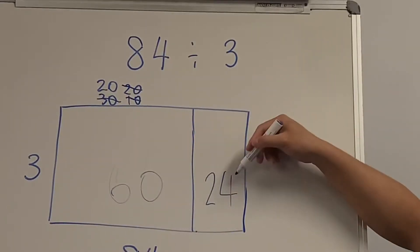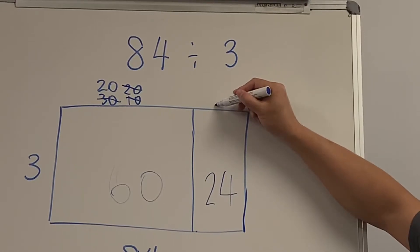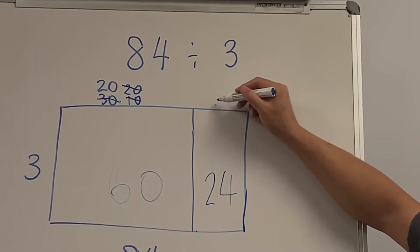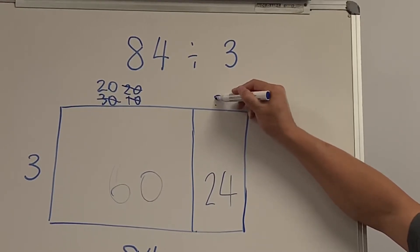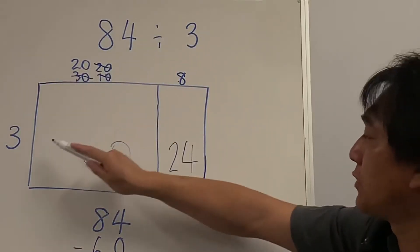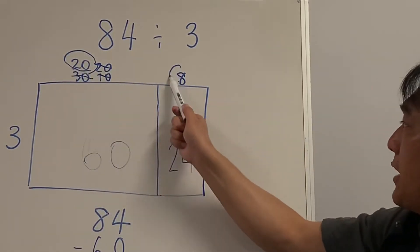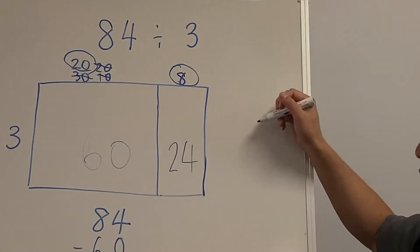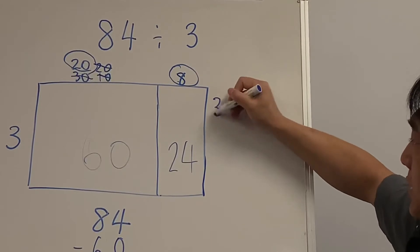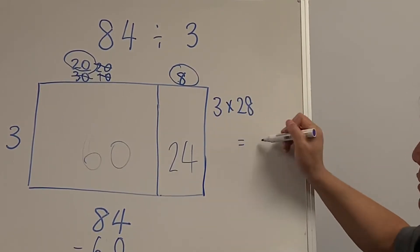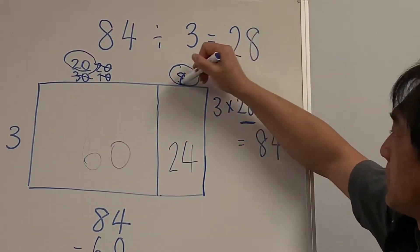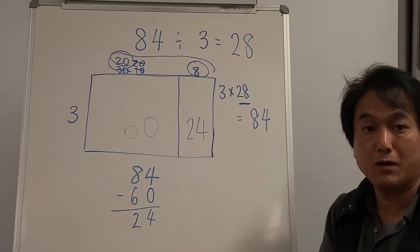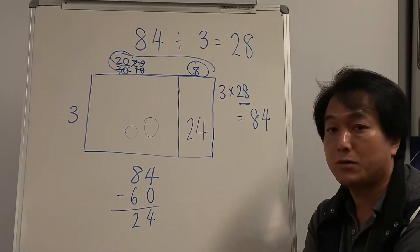1×3=3, 2×3=6, 3×3=9, 4×3=12, 5×3=15, 6×3=18, 7×3=21, 8×3=24. So 8 columns will make 24. That means 3 lots of 28 equals 84 — the answer is 28. How did you go?